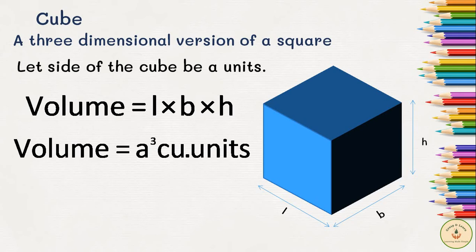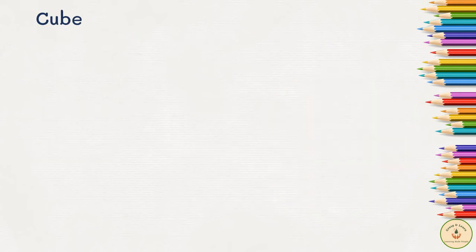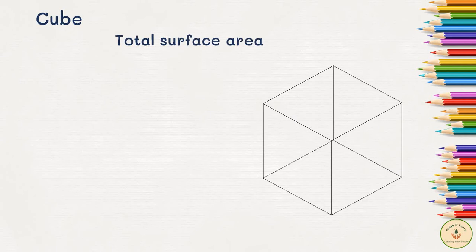Next is total surface area of the cube. Total surface area is nothing but the sum of the areas of all the surfaces of that object. Now when we talk about the cube, it is made up of six squares, so we have to add the areas of all these six squares.